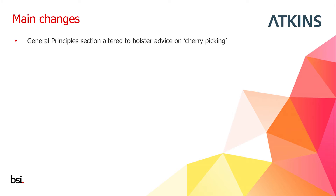The first main change is to the general principles section, which has been altered to bolster advice on cherry-picking. Some designers look at all the codes and standards available, pick the most palatable bits from each, and present that mishmash to building control as a fire-safe design. That doesn't work — BS9999 is a comprehensive standard where certain parts rely on other parts to be safe. Mixing palatable bits of BS9999 with palatable bits of Approved Document B may not produce an acceptably fire-safe design.